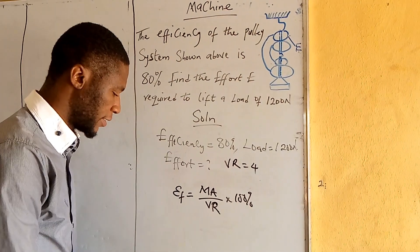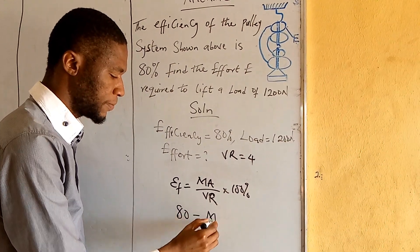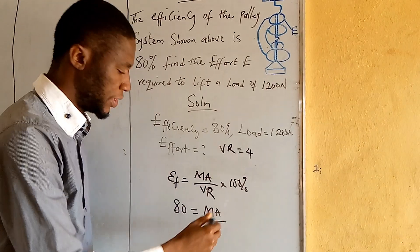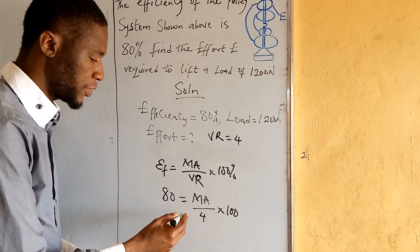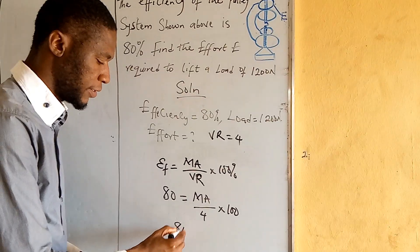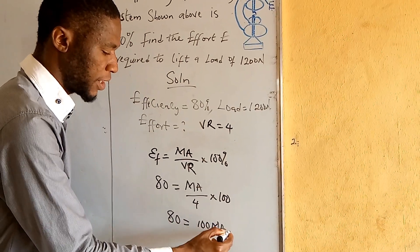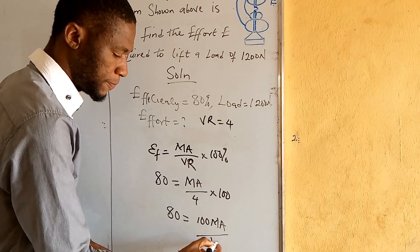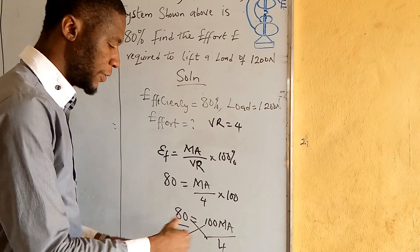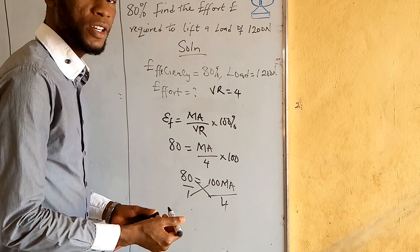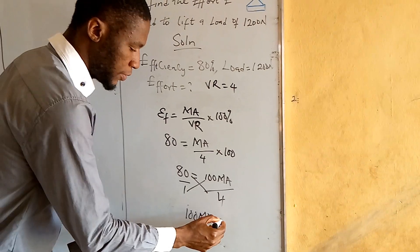We have the efficiency as 80, equals to mechanical advantage — which is not given — over the velocity ratio, which is 4, times 100. So cross-multiplying, 80 multiplied by 4 gives us 320, and mechanical advantage times 100 gives us 100 MA, all over 4. Cross-multiplying gives us 320.